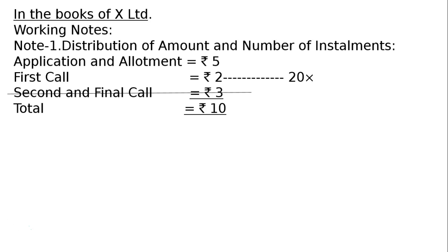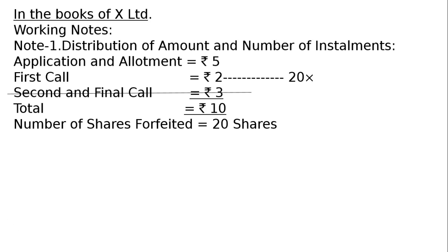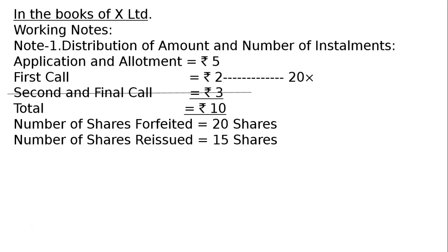A person holding 20 shares — the shareholder's name is not given — failed to pay the first call of Rs.2 per share on 20 shares, and out of these, 15 shares are reissued to Nourish. Number of shares forfeited: 20 shares; number of shares reissued: 15 shares.